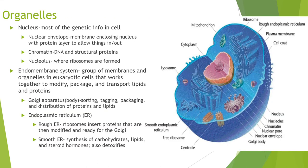First, I'm going to talk about the organelles in an animal cell. The nucleus contains most of the genetic information. The nuclear envelope surrounds the nucleus and is made up of a protein layer to allow things in and out. Chromatin contains DNA and structural proteins, and the nucleolus is where ribosomes are formed. The endomembrane system is a group of membranes and organelles that work together to modify, package, and transport lipids and proteins. The Golgi apparatus is involved in sorting, tagging, and distribution of proteins and lipids.